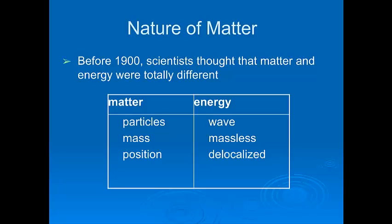Prior to 1900, energy was energy, matter was matter, and never the two should meet. Matter was made of particles. It had mass. You could see those particles. You could figure out where their positions were. Energy was waves. It didn't have mass. It was delocalized. And that was the way it was. If you wanted to talk about energy, you had to talk about it in terms of waves and things like we just talked about. But matter was talked about in terms of particles.